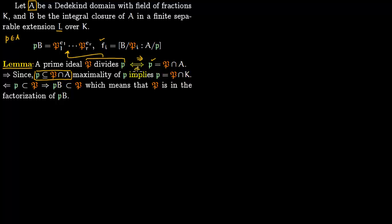In the opposite direction: if P equals capital P intersect A, then P lies within capital P. This means PB lies within the ideal generated by P in ring B, which precisely means P appears in the factorization of the small p — and being in the factorization means P divides p. So this direction is also done.